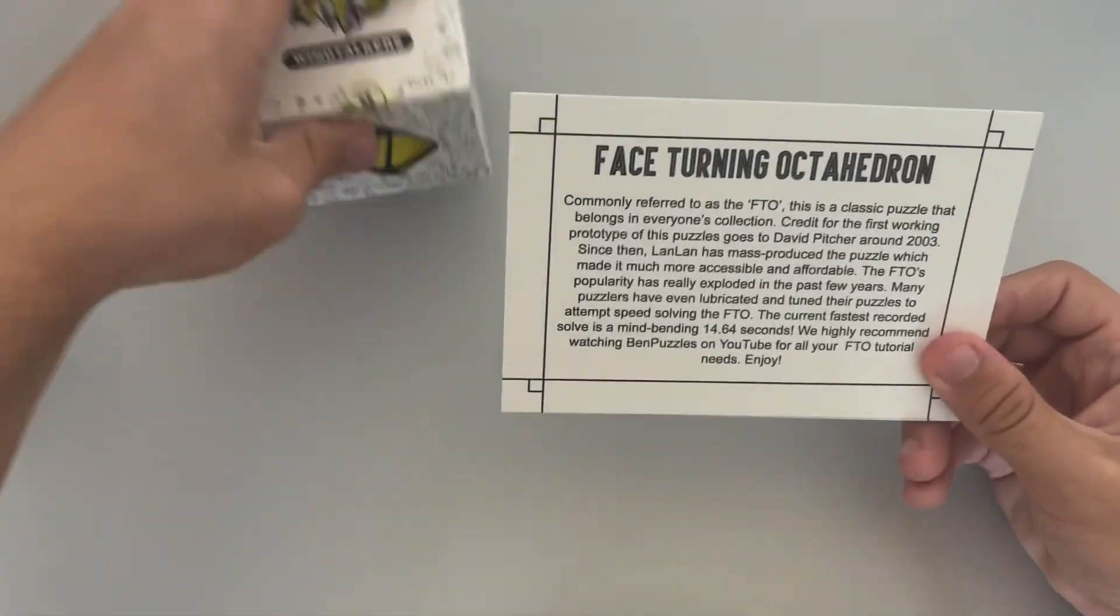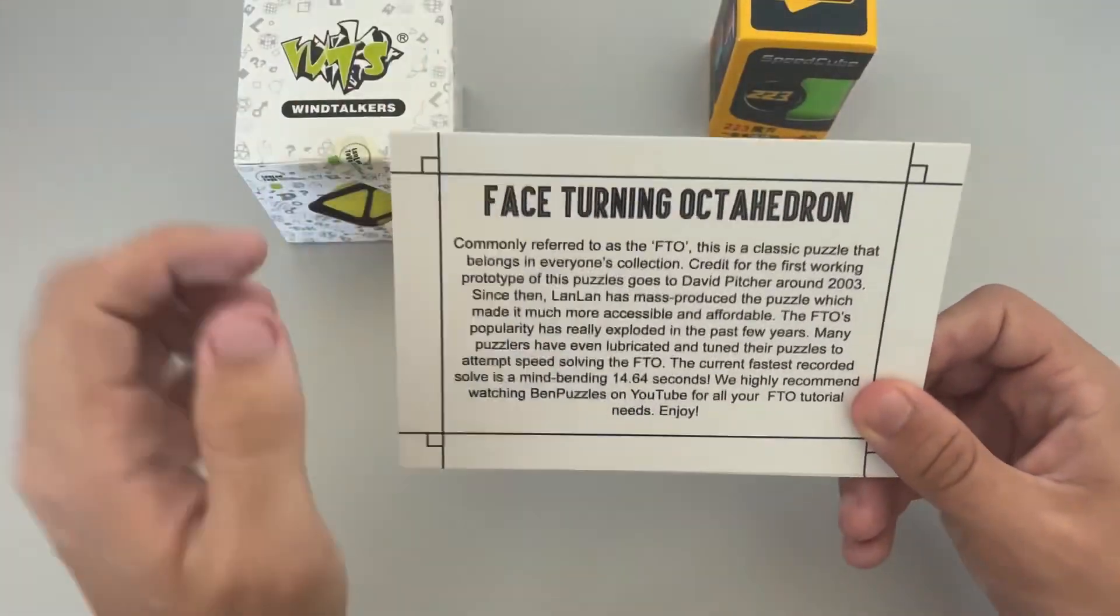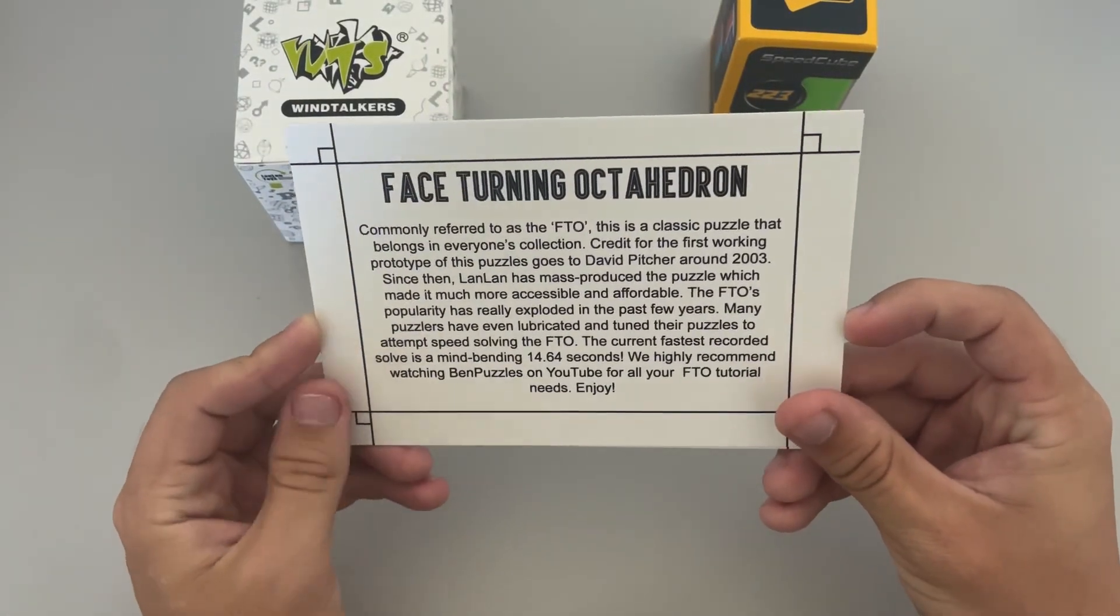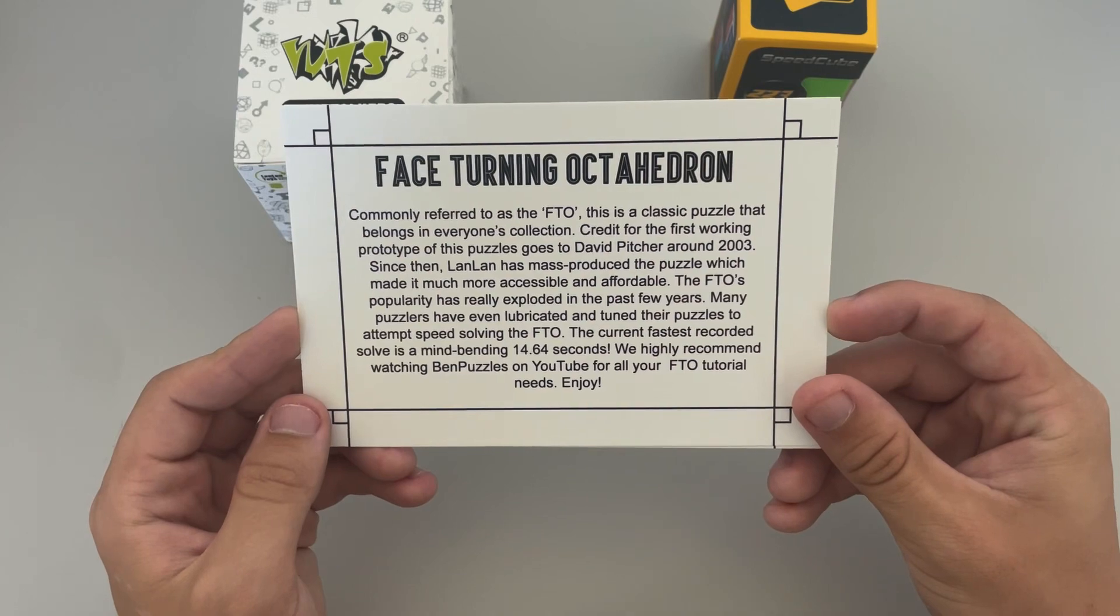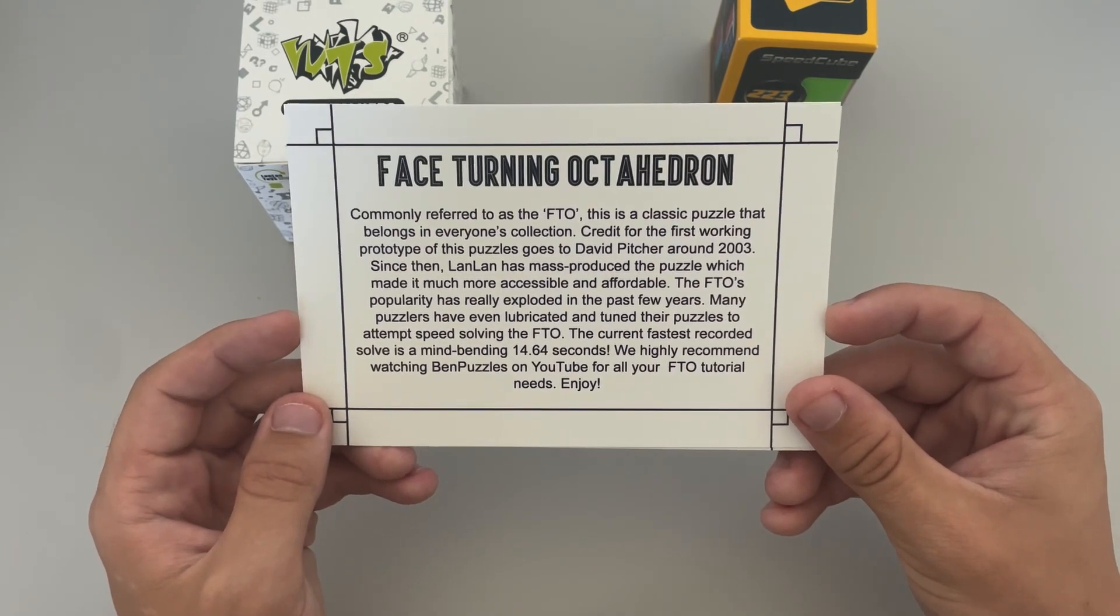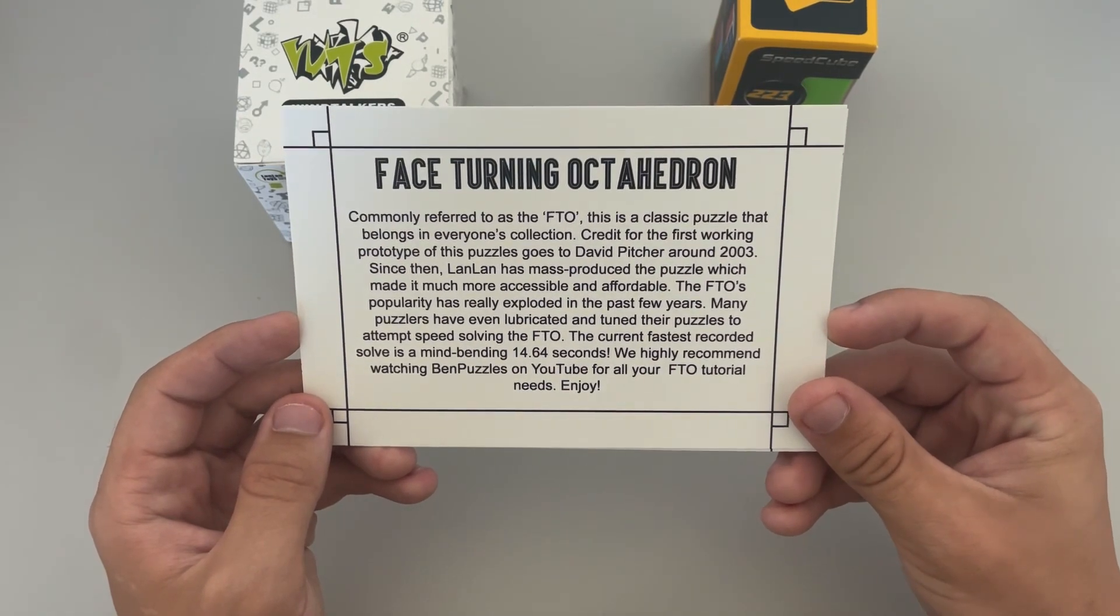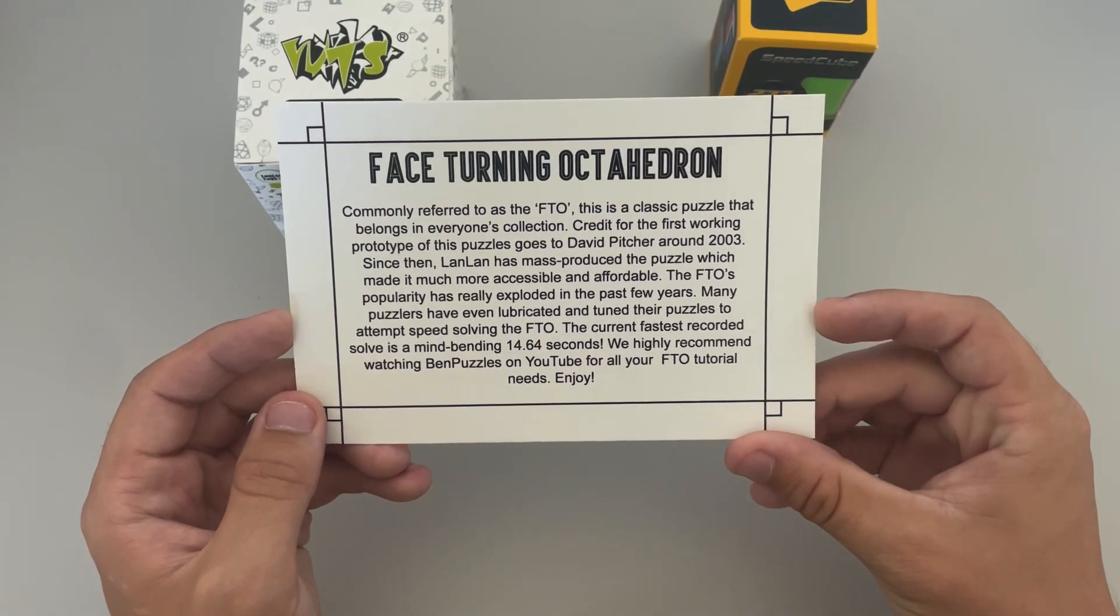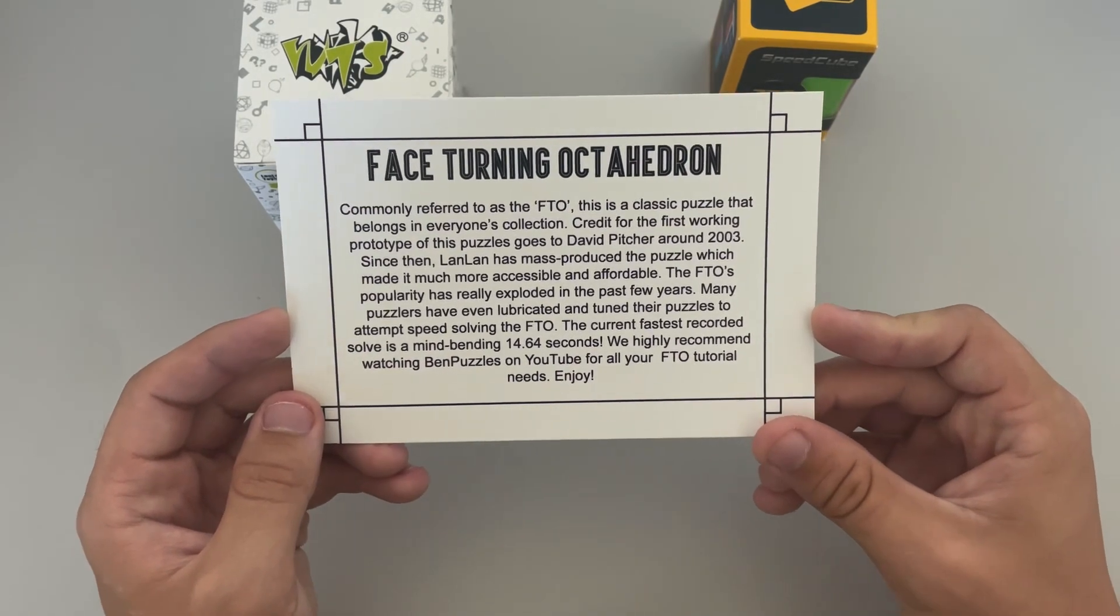We have the face-turning octahedron, commonly referred to as the FTO. This is a classic puzzle that belongs in everyone's collection. Credit for the first working prototype of this puzzle goes to David Pitcher around 2003. Since then, Lanlan has mass-produced this puzzle, which made it much more accessible and affordable.